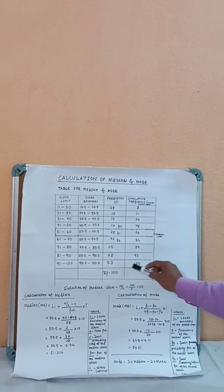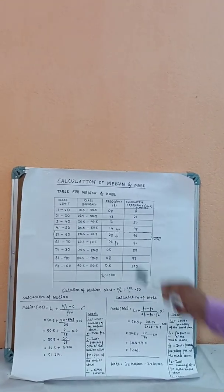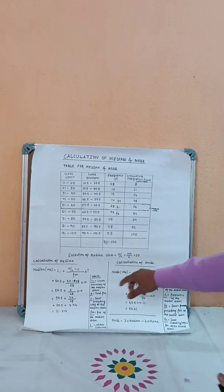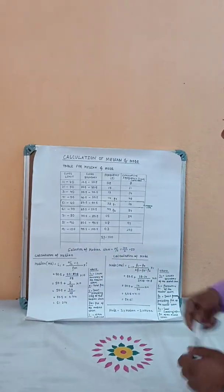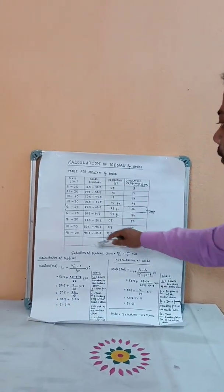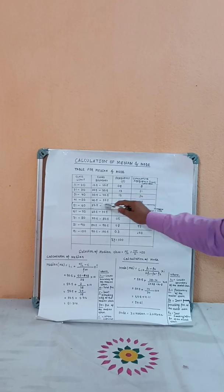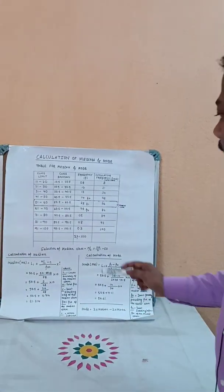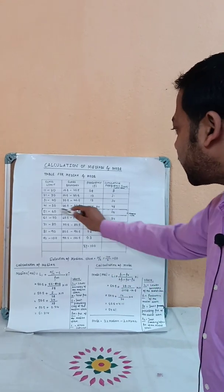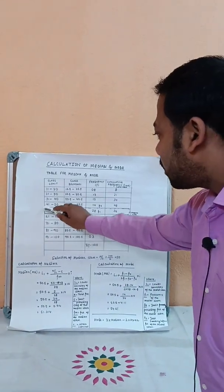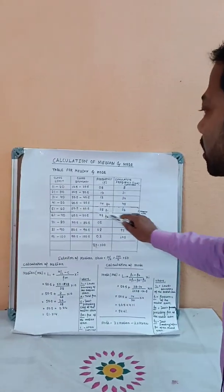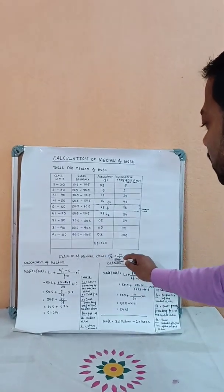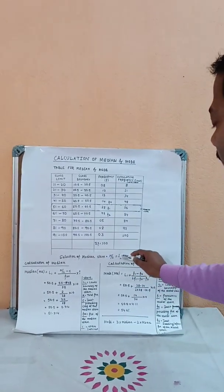From this table, how do we calculate the median value? To select the median class, we use n divided by 2, which is 100 divided by 2, equal to 50.